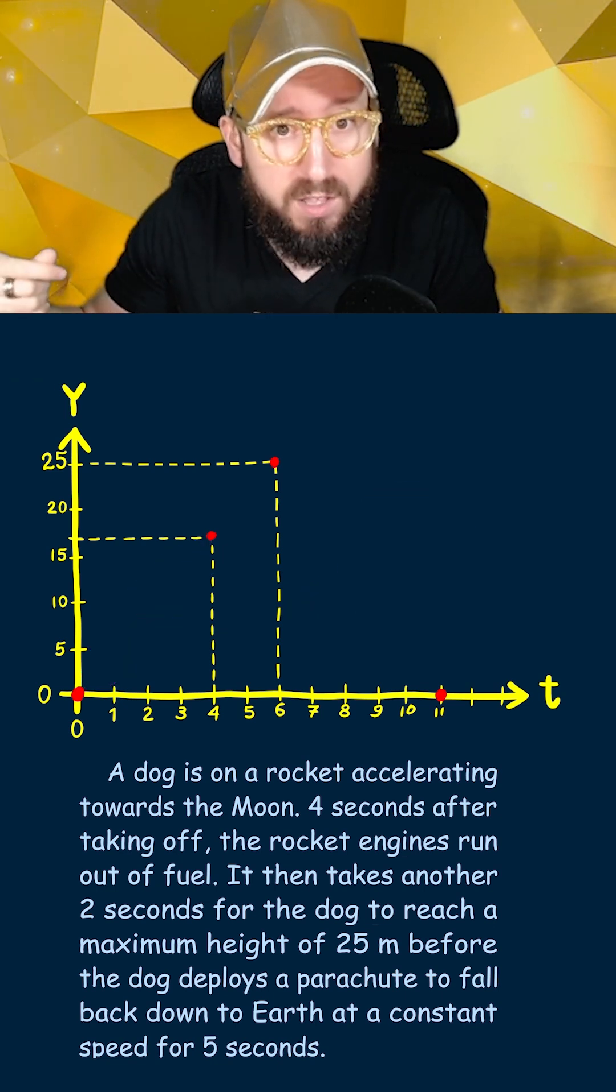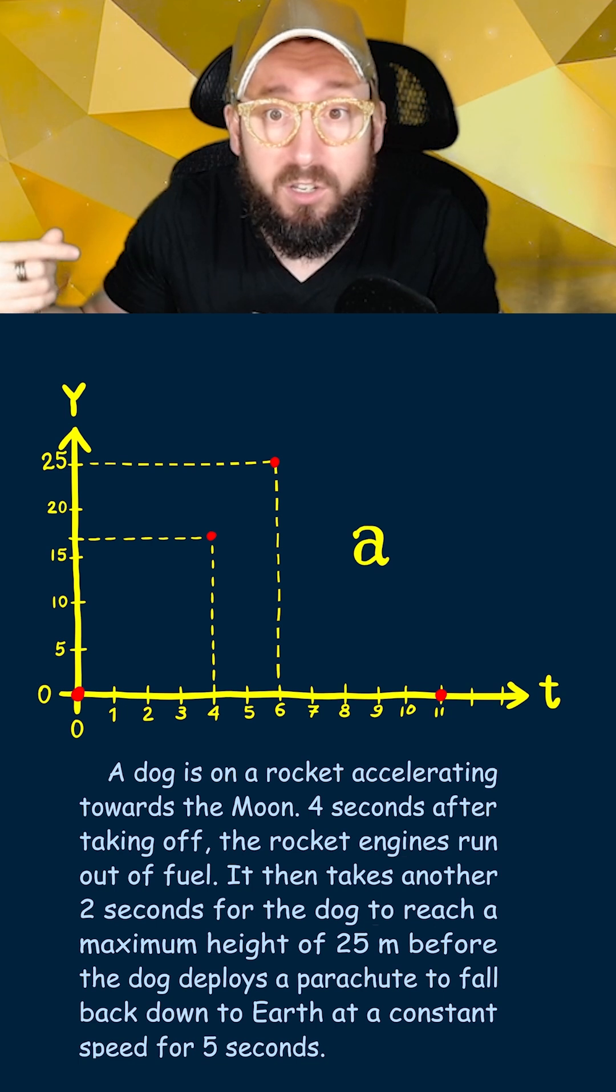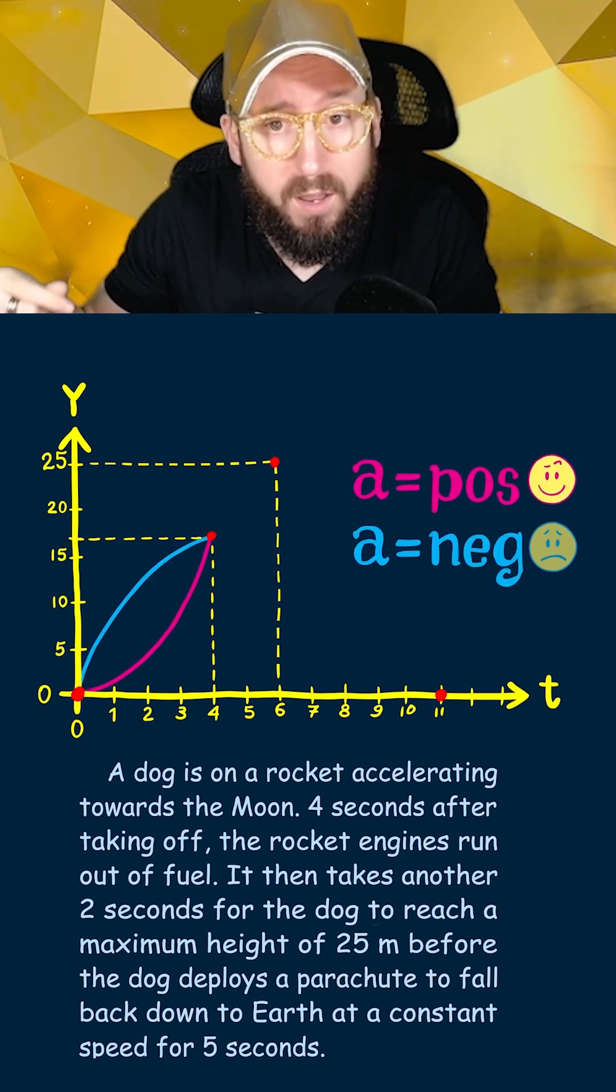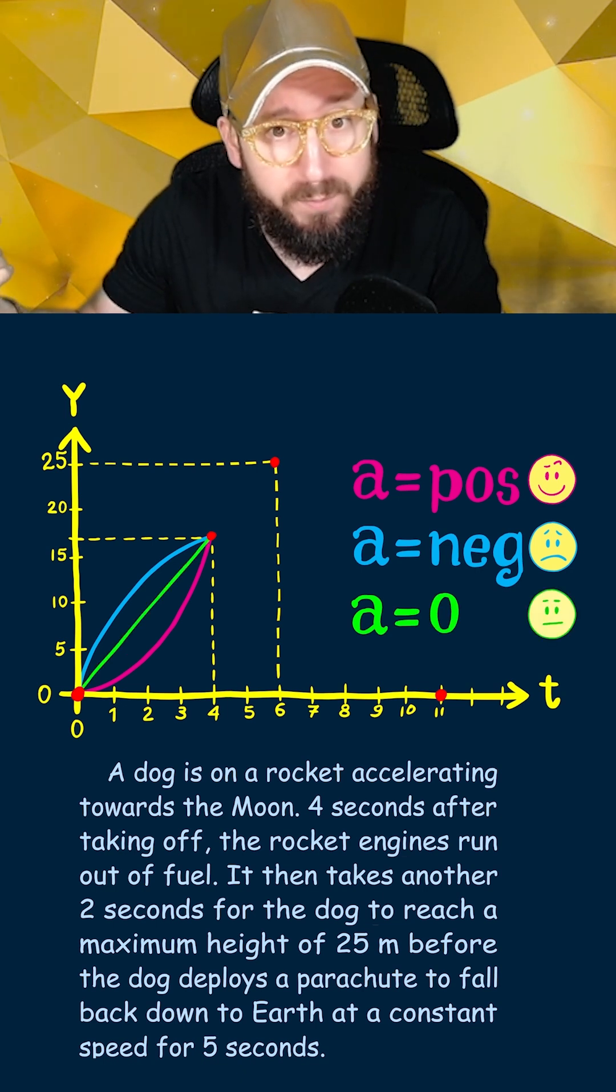The trick to knowing which connecting line to use is to look at what the acceleration is. If the acceleration is positive, you'll use a concave up curve. If the acceleration is negative, you'll use a concave down curve. And if there's no acceleration, you're just gonna use a straight line.